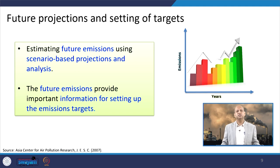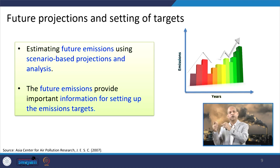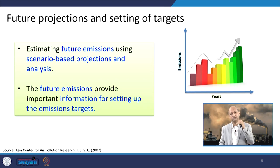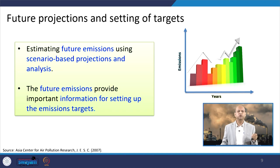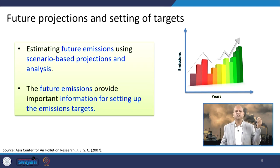Future projections and setting of targets are also very important. You can estimate future emissions — for example, after 10 years, what will the emissions of a particular city be? You look at what kind of activities will increase or decrease, create different scenarios, make projections, and analyze whether certain pollutants will increase or decrease. Accordingly, you can look at the policies and programmes depending upon the projections.